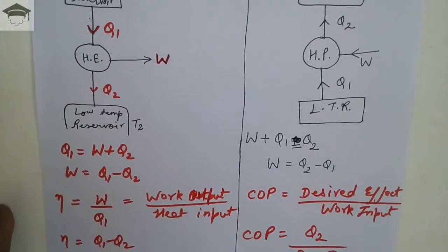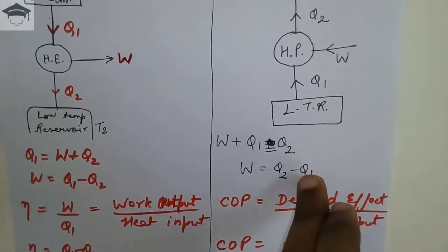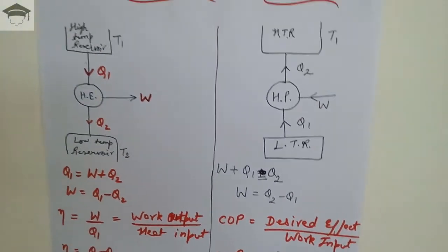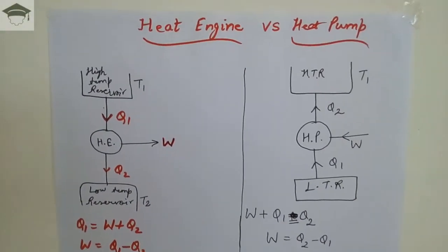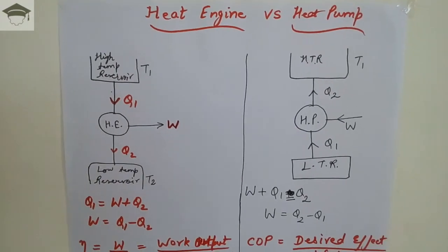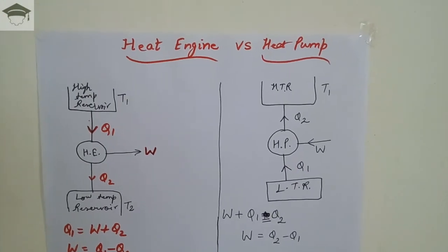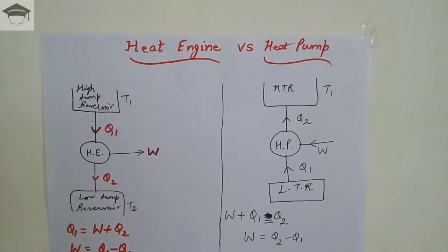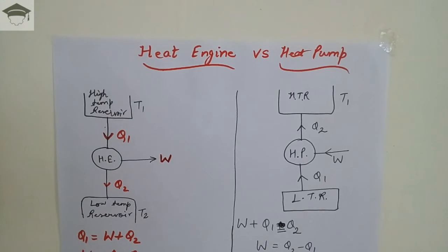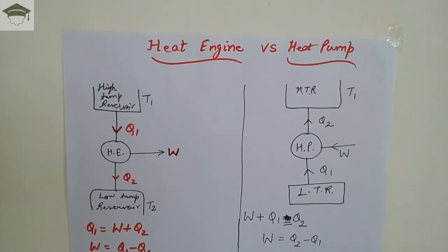For a heat engine, efficiency eta is used, and for a heat pump, COP or coefficient of performance is used. I hope you have understood what is a heat engine, what is a heat pump, and the difference between the two. If you found this video helpful, please press the like button, share this video on social media, and watch my other videos. Please check the description below. Till next time, take care, bye bye.